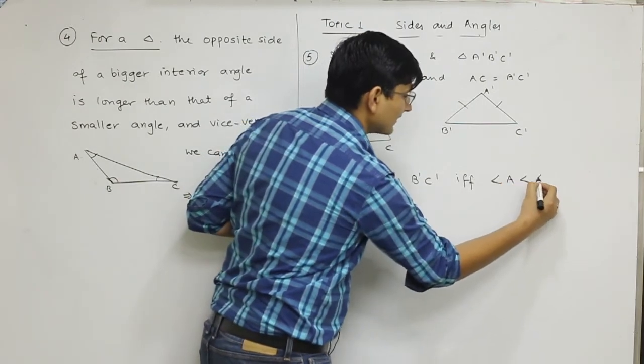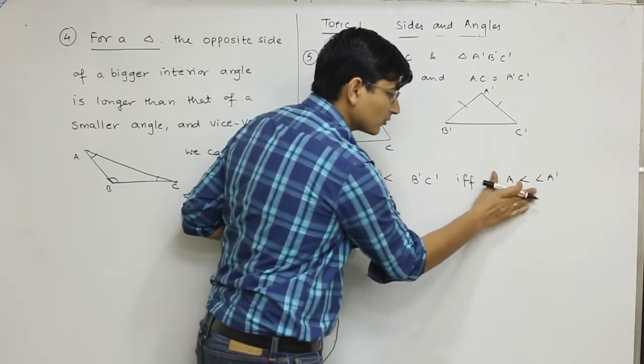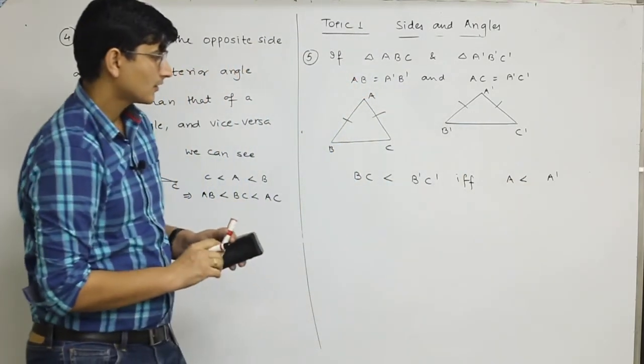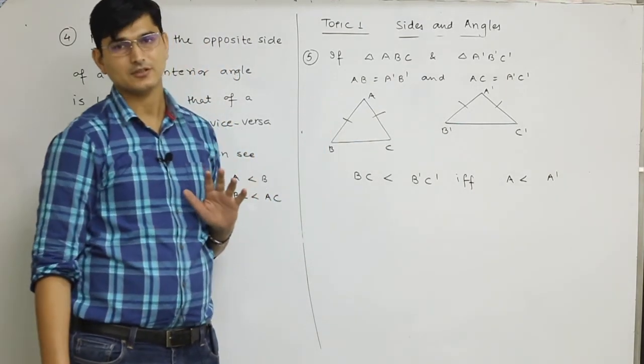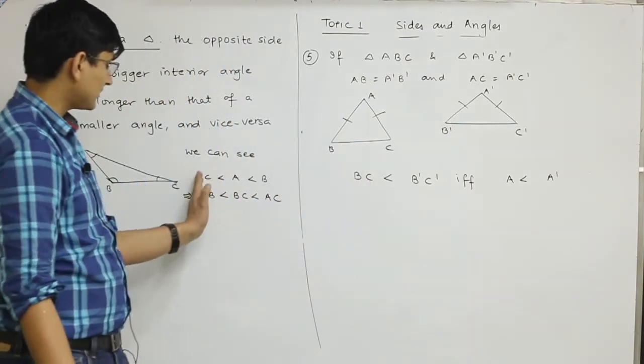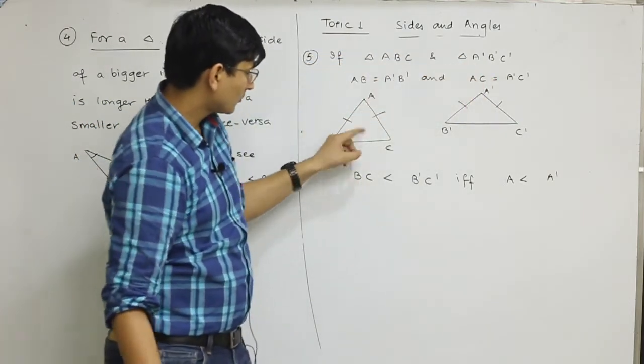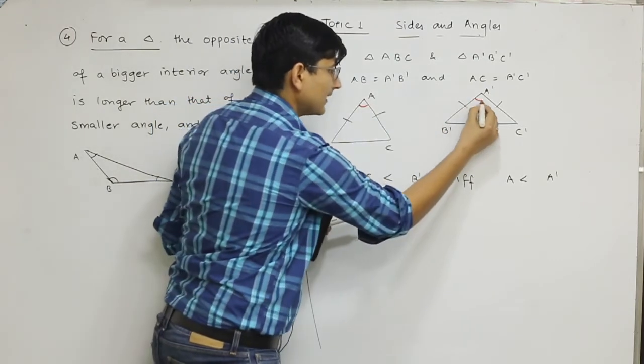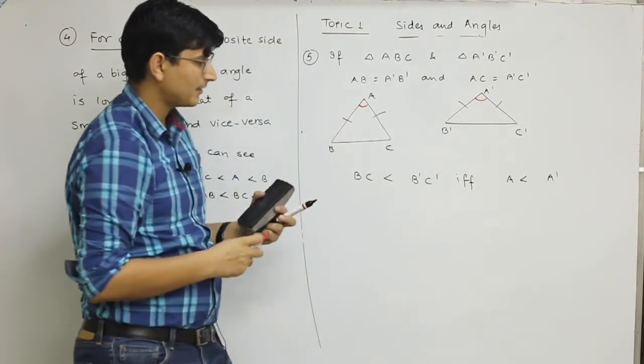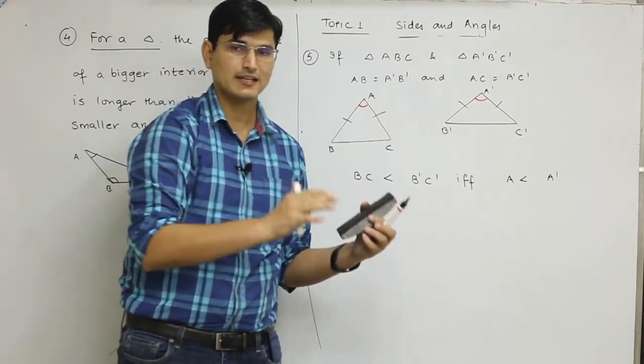If A is smaller than A', then its opposite side will also be smaller than the corresponding side. This is the same application. If these two sides are equal and angle A is smaller than A', the opposite side will also be smaller. If the opposite side is smaller, then the angle is also smaller.